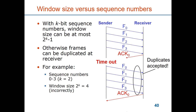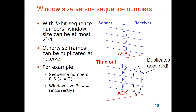So this is how continuous ARQ works — it's a sliding window mechanism that follows very well from stop-and-wait, just allowing more frames to be sent. The bookkeeping on the sender and receiver side of what has been sent and what is expected to be received is similar.